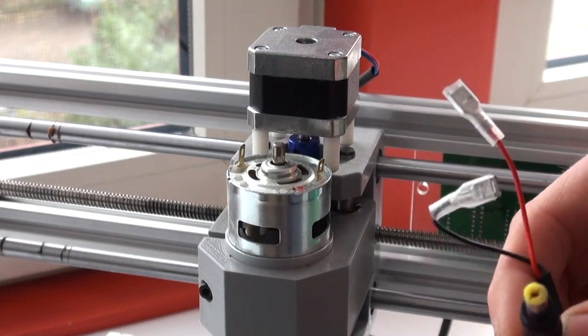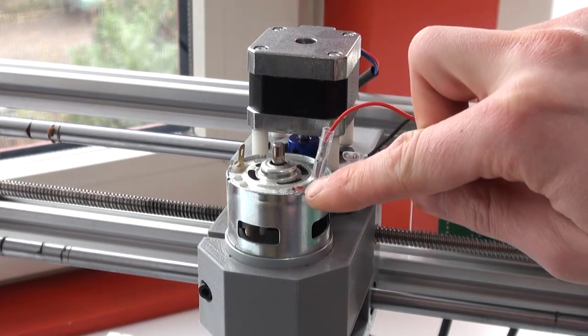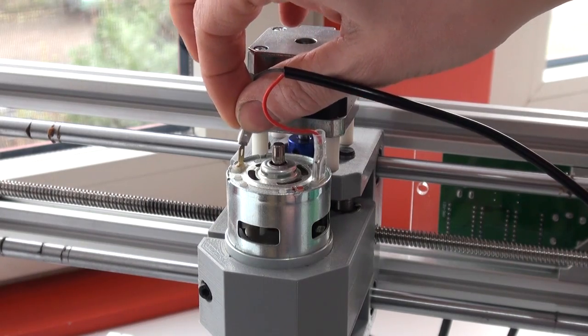The wires from the spindle motor can now be attached. The positive lead on the motor is indicated with a red dot. Attach the red wire to this lead and a black wire to the other lead.